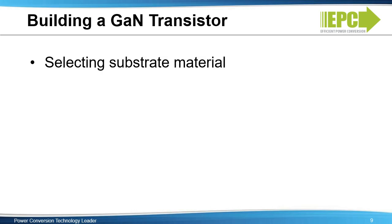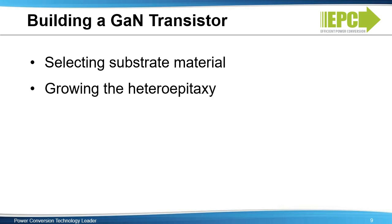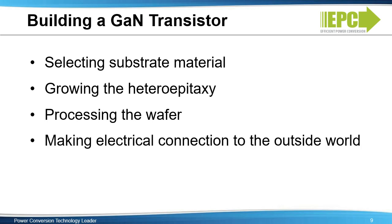As shown in this video, the building of a GAN transistor starts with the selection of a substrate material. Then the heteroepitaxy is grown and the wafer is processed in a standard CMOS fab. Finally, electrical connections to the outside world are made. Thus, a high-performing GAN transistor is built utilizing the well-developed, low-cost silicon manufacturing infrastructure.